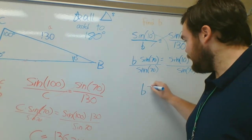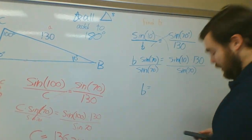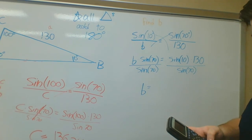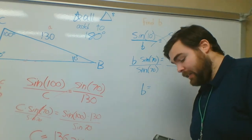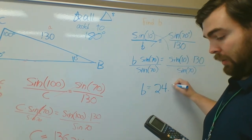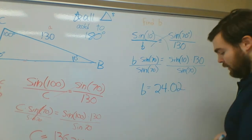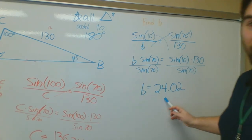So, I'm going to get lowercase b is equal to whatever I end up plugging in here. So, I'll start plugging it in. Sine of 10 degrees. Sine of 10 times 130. I'll get about 22.57. I'm going to divide that by sine of 70. So, final answer here, 24.02. If you want to round that to 24, probably would be fine. But, know that it's not exactly the same.